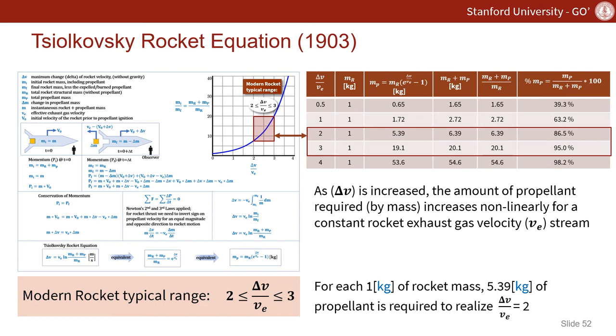The same thing is true when we look at 3. That's telling us we need 19.1 kilograms of propellant for every 1 kilogram of rocket mass that's accelerated to 3 times the exhaust velocity. So this is an interesting table, it's a really nice takeaway.